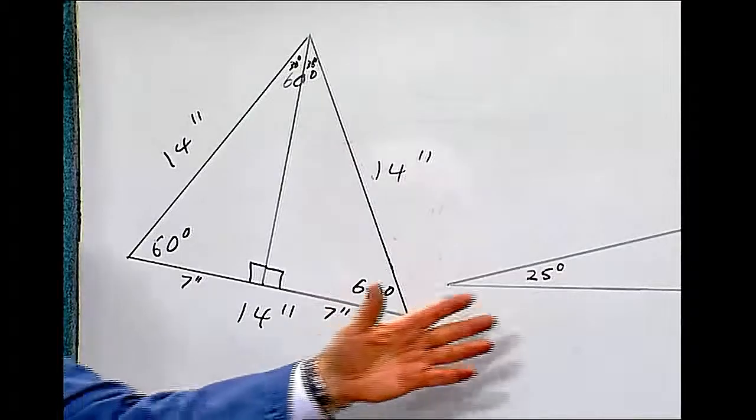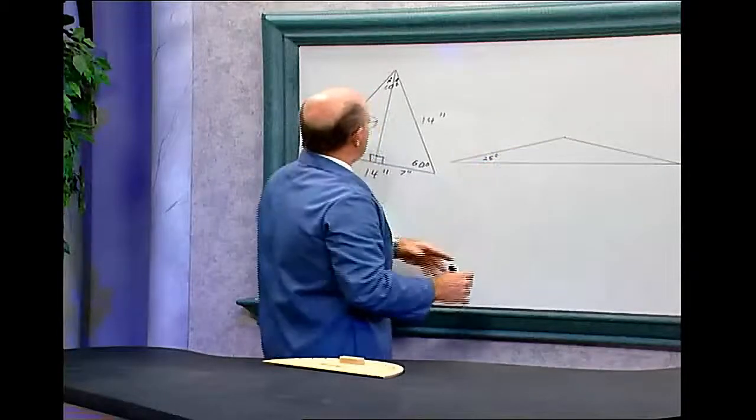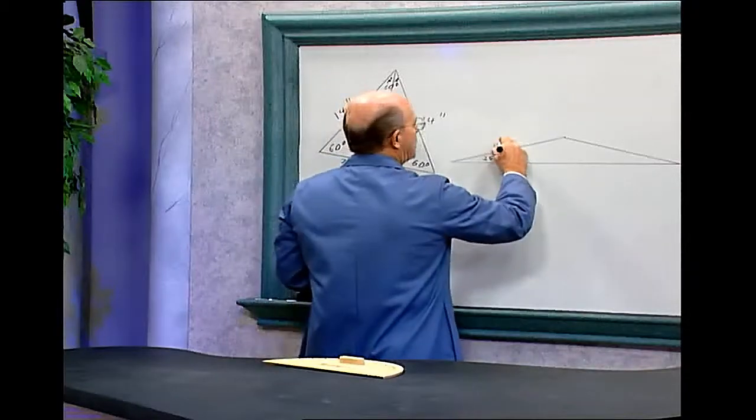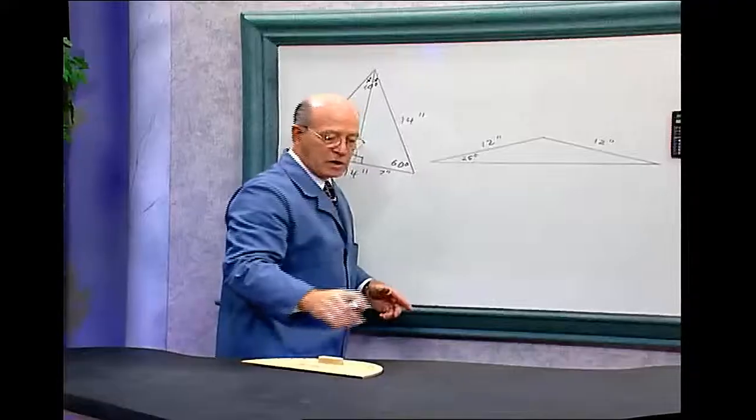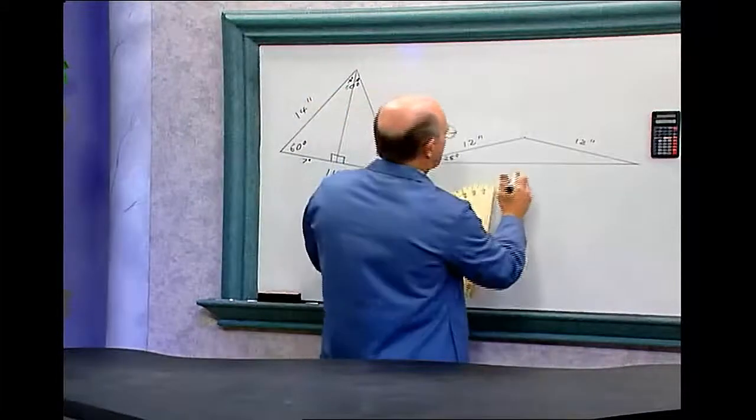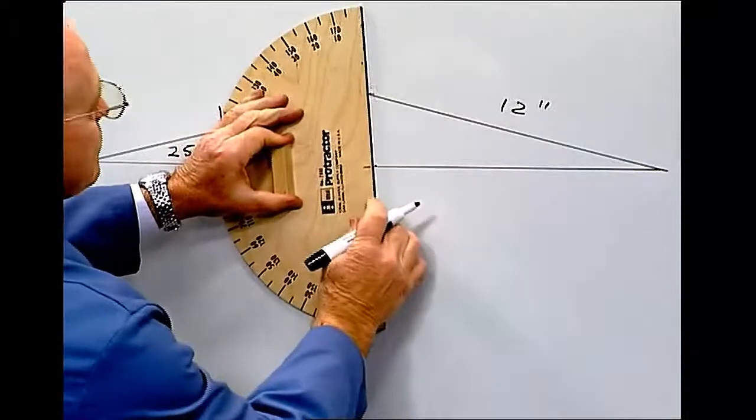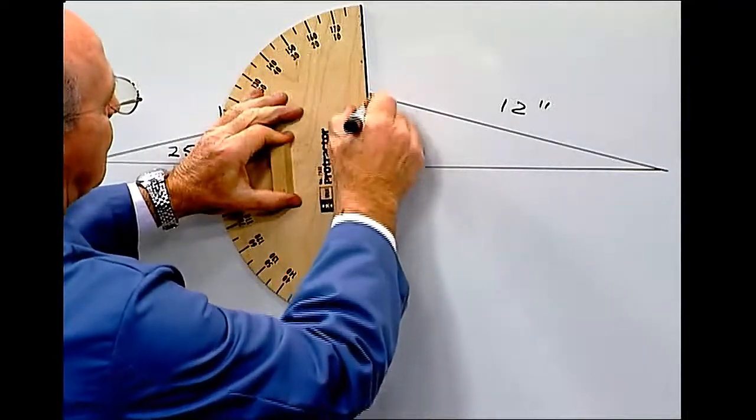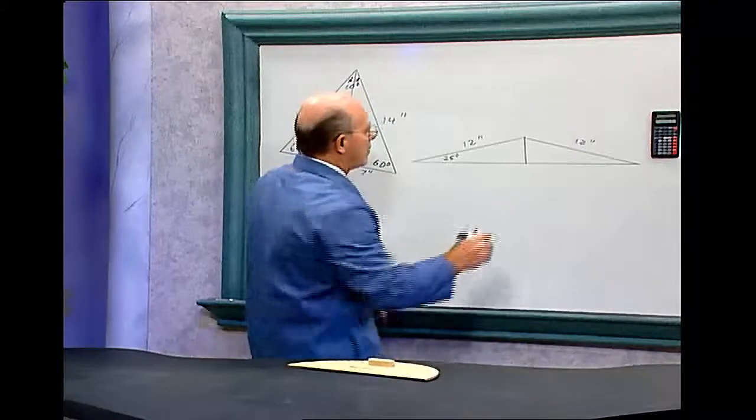Now we have the isosceles triangle, and again, both these sides are equal. Let's say these sides are 12 inches. If you go down right in the middle, put a point here, and we go down, this is a right angle.